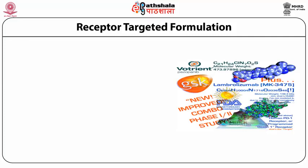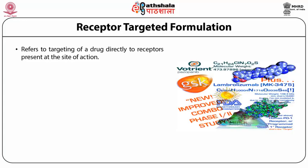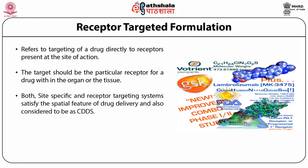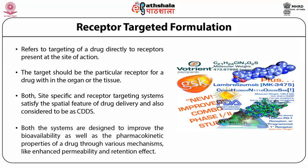The most idealistic controlled drug delivery system is receptor targeting, which refers to targeting a drug directly to the receptors present at the site of action, where the target is the receptor for the drug within the organ or tissue. Both site-specific and receptor targeting systems satisfy the spatial feature of drug delivery and are considered controlled drug delivery systems. Both are designed to improve bioavailability and pharmacokinetic properties through various mechanisms — one well-studied mechanism being the enhanced permeability and retention (EPR) effect, highly valuable for cancer treatment or tumor targeting.